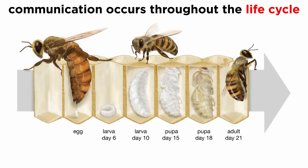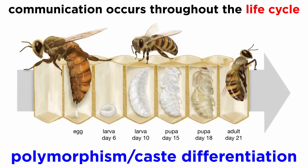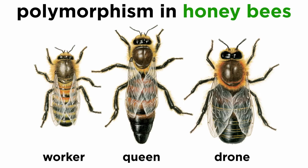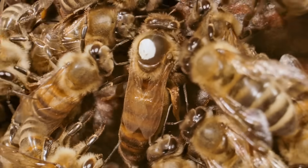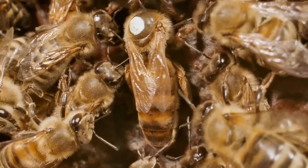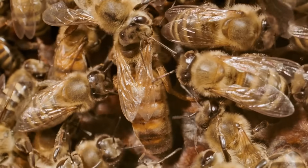Communication here occurs at all stages of the life cycle, and the society usually demonstrates polymorphism, or caste differentiation, where numerous forms exist, even within genetically identical individuals. In honeybees, for example, there are three castes: the sexually mature female queen, the sexually mature male drones, and the sexually inactive workers, which are inactive genetic females. Contrary to popular belief, the queen is not in charge of the hive, and workers may remove or even kill queens to replace them.